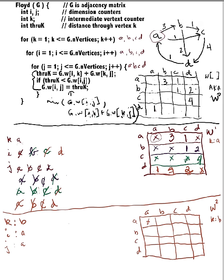Let's remind ourselves of what's going on here. This says the shortest path from A to A directly will be the minimum between A to A, which is infinity, or A to A by way of A, which is infinity, or A to A by way of B, which is 3 plus infinity — so infinity. J is B, so the minimum between 3 and A to B is 3, plus B to B is infinity. Minimum between 3 and infinity is 3. No improvement there.